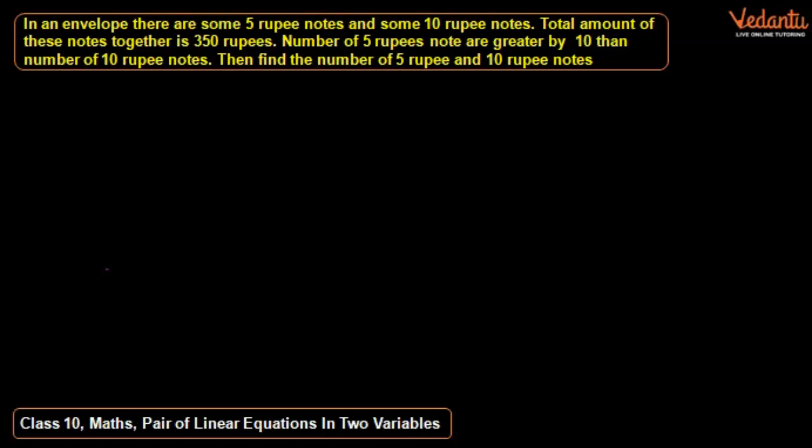In an envelope there are some 5 rupee notes and some 10 rupee notes. The total amount of these notes together is 350 rupees. The number of 5 rupee notes are greater by 10 than the number of 10 rupee notes. Find the number of 5 rupee and 10 rupee notes.